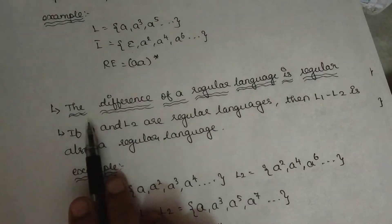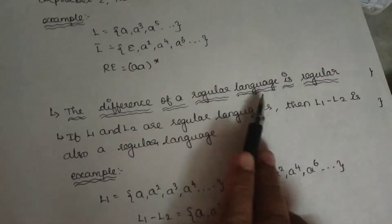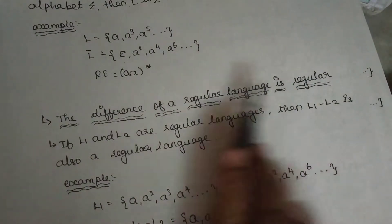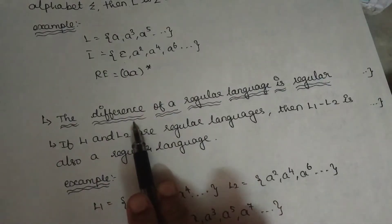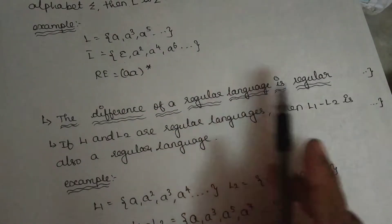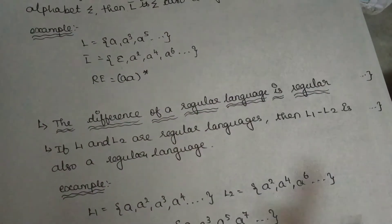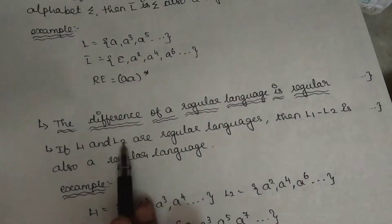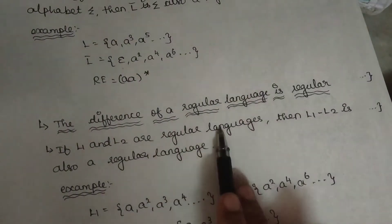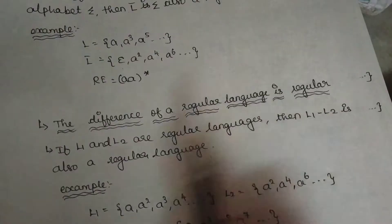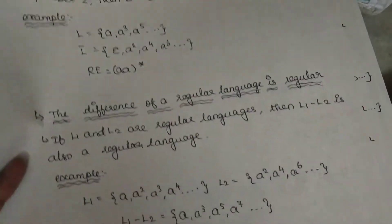Now, let's look at the difference of regular languages. If you have two languages, you can choose different languages. That language can be said in the same language — a regular language can be said in the same language. So, what we want to do is take two regular languages. Then you can choose different languages, then we can show one regular language, so we can prove it.